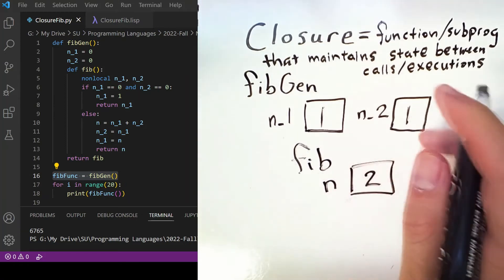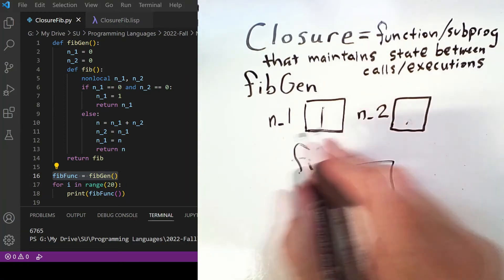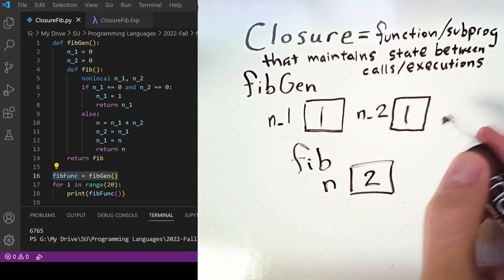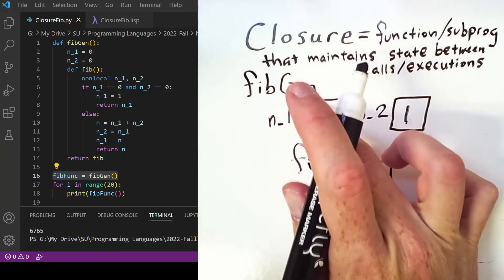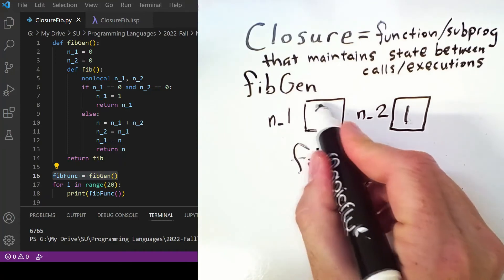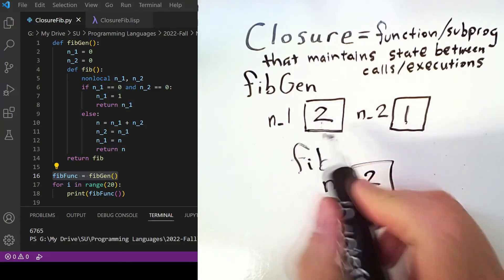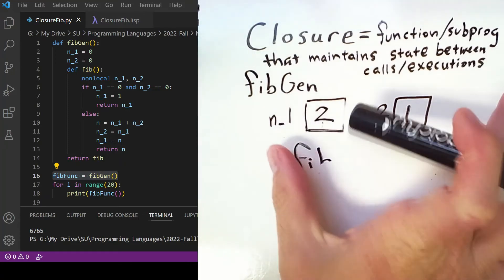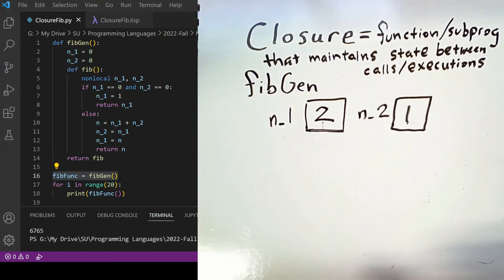And n2 will be updated to be n1, so it doesn't change, but then n1 is updated to be n. And we'll return that value, and then when this returns we have moved forward in the sequence again.